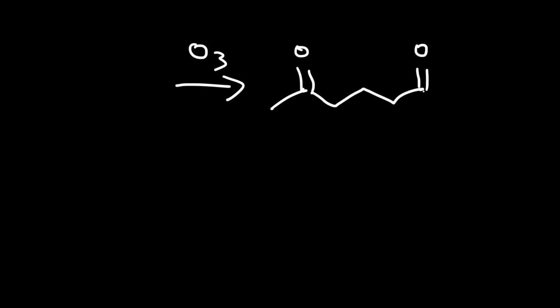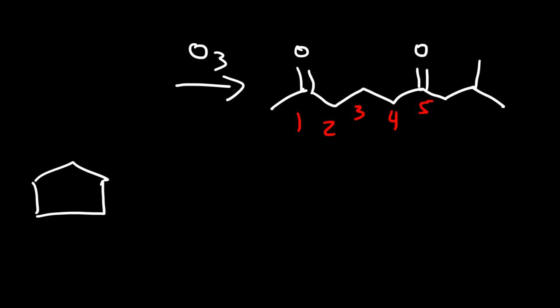Let's try one more example. What do you do if both carbonyl groups are in a single molecule? We know the original alkene must have been a cycloalkene. I like to count from one carbonyl to another — this tells me the original molecule is a 5-carbon ring. The double bond is between carbons 1 and 5. Attached to carbon 1 is a methyl group, and attached to carbon 5 is an isobutyl group. Now you know how to find the original alkene in an ozonolysis reaction.